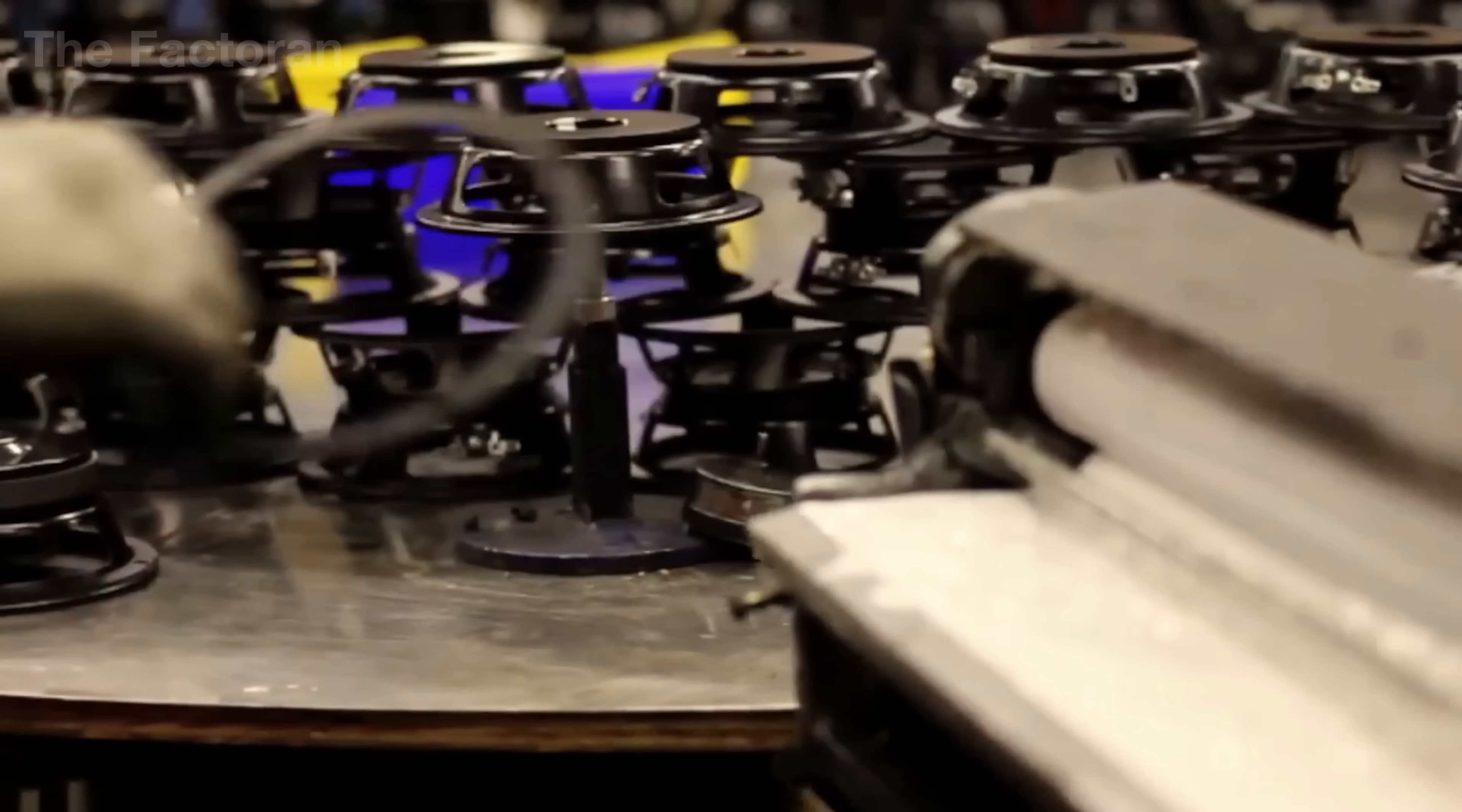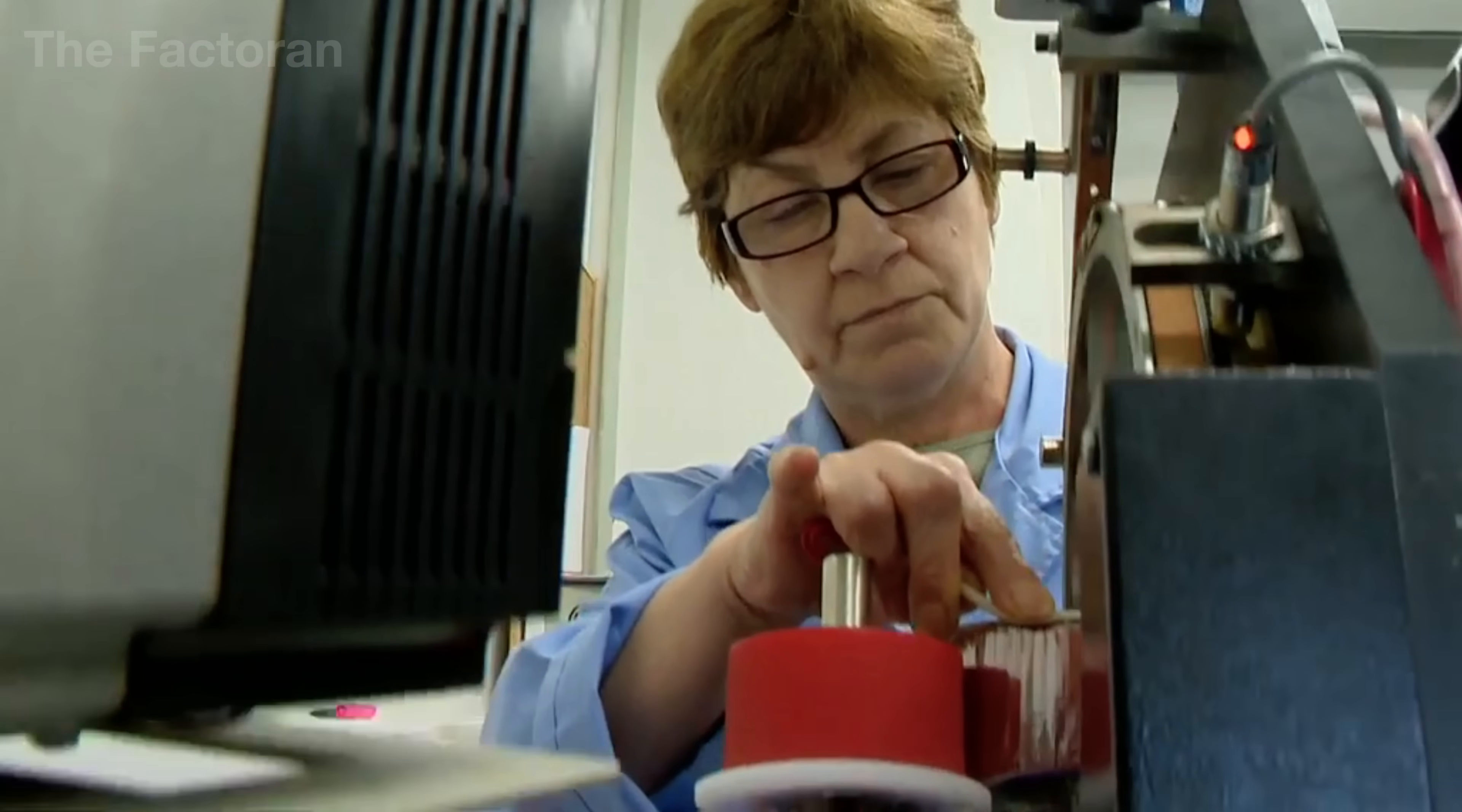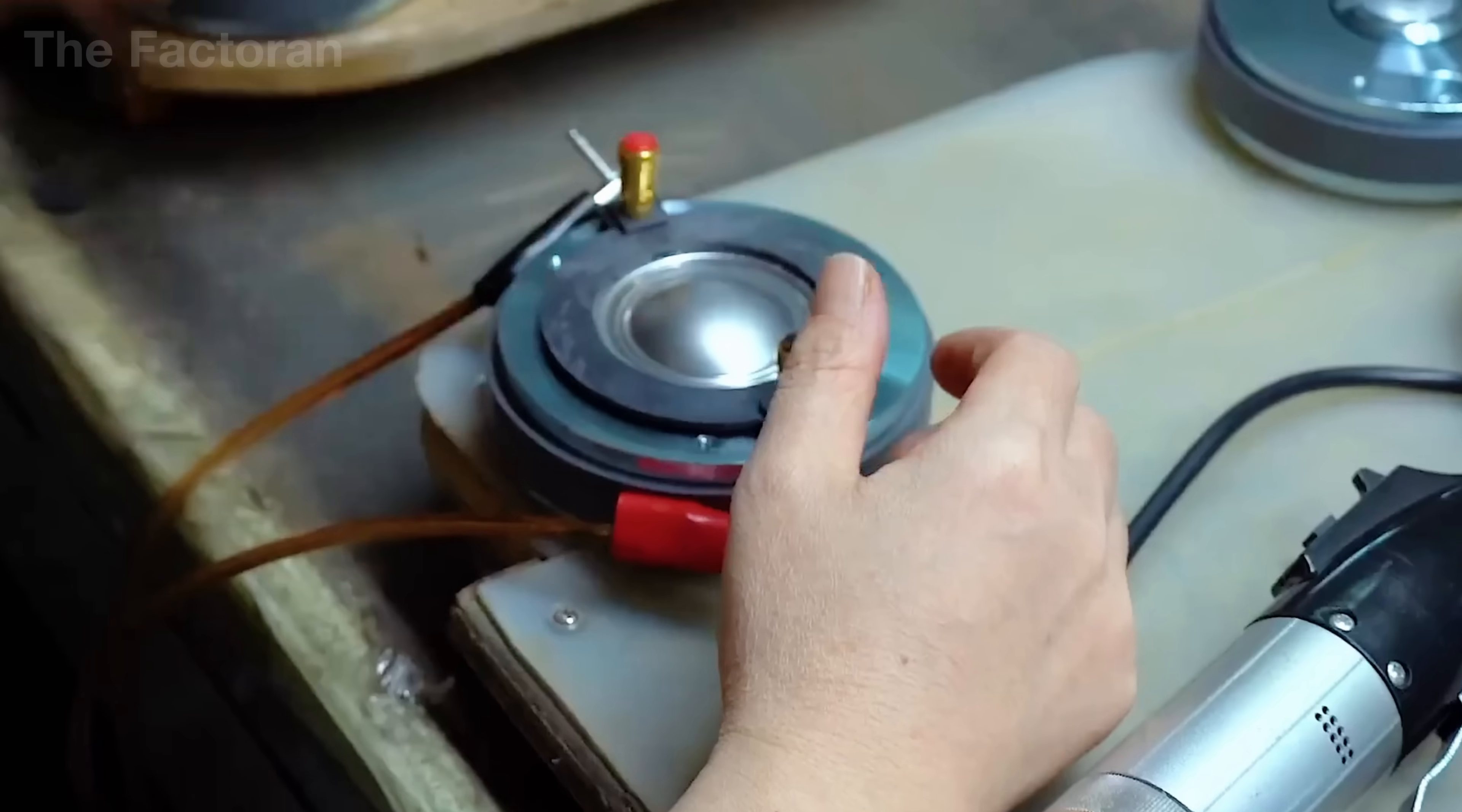When the magnetic assembly is perfectly aligned, the speaker frame receives its two core components, the voice coil and the diaphragm. If a loudspeaker were an electronic instrument, the coil would be the source of motion, while the diaphragm becomes the surface that delivers sound, two elements that cannot function effectively without each other.